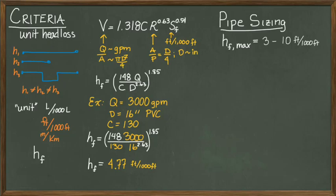If we take the modified form of the Hazen-Williams equation and then solve for D, we get the following expression for the minimum diameter required to meet the unit head loss criterion.